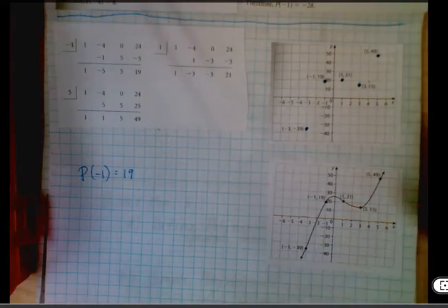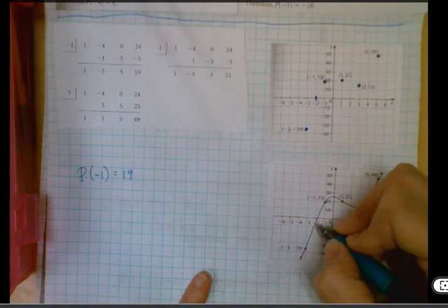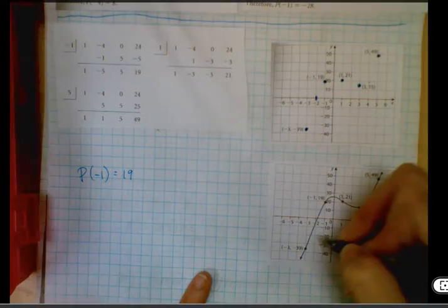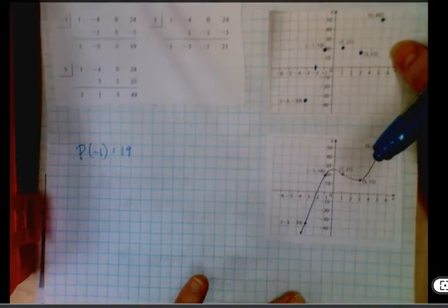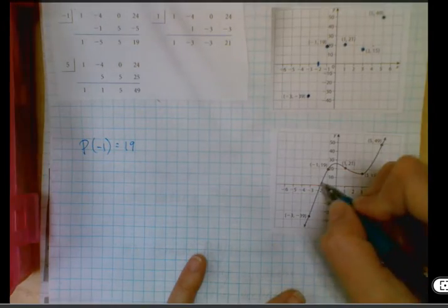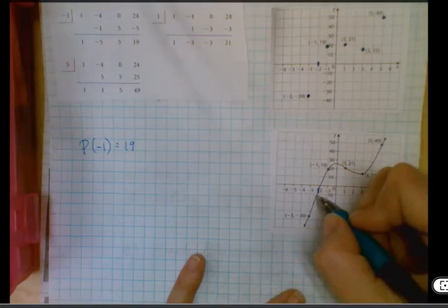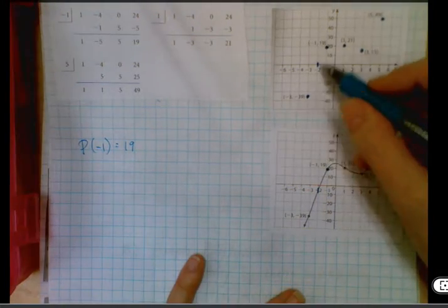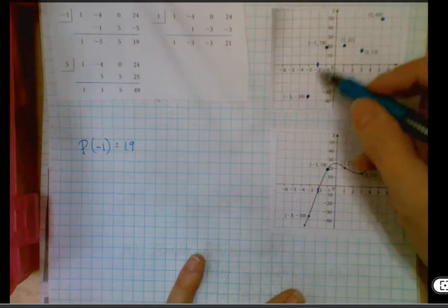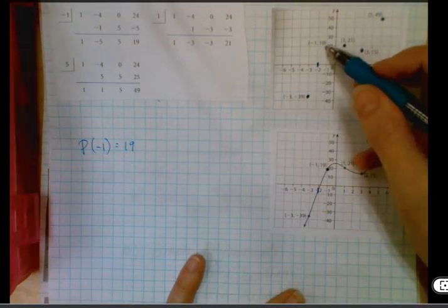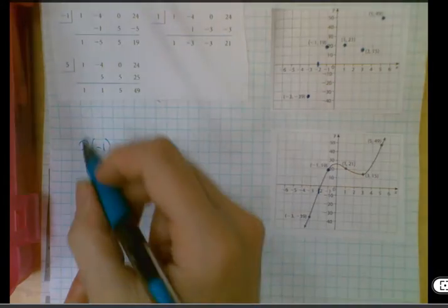So some things you might want to notice when you're looking at this. If I had plugged in negative 2, I would have got some decimal, some approximation between the two. Negative 2. And somewhere between negative 2 and negative 1, my value goes from an output that's negative to an output that's positive. So there must be some root between those two numbers, which allows us to kind of think about this.